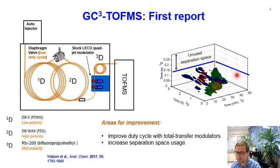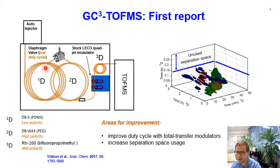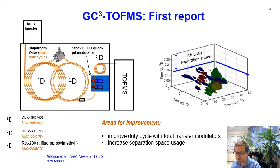For instance, the separation space, i.e. the distribution of components in the 3D dimensions, could have been further improved. Perhaps more importantly, the diaphragm valve only transferred about 10% of the material from column 1 onto the subsequent separation dimensions. Therefore, we wanted to improve the duty cycle by using only total transfer modulators, and see if we could evaluate columns that would provide increased usage of the separation space.